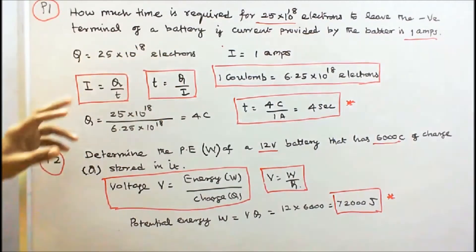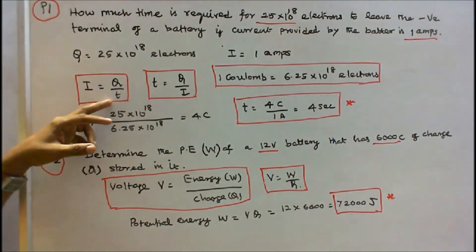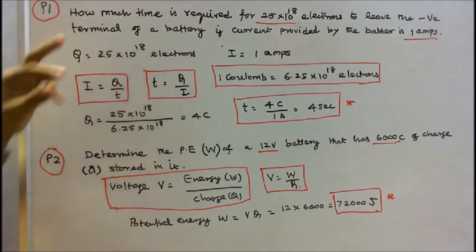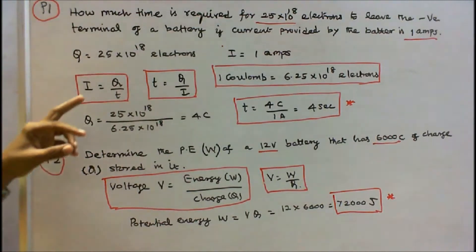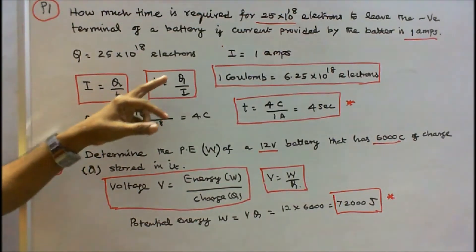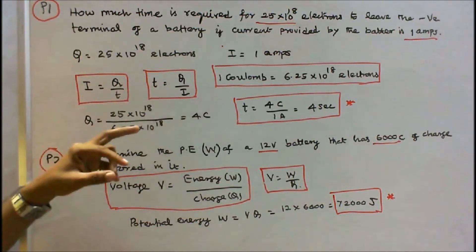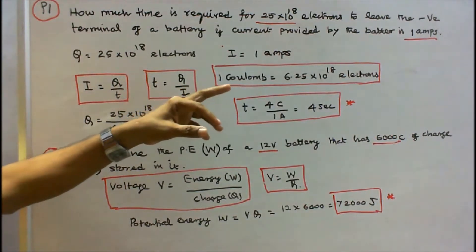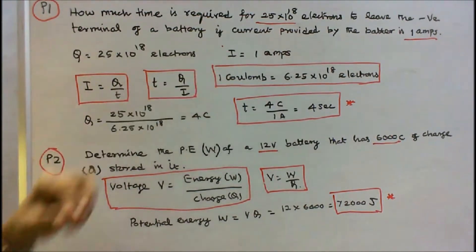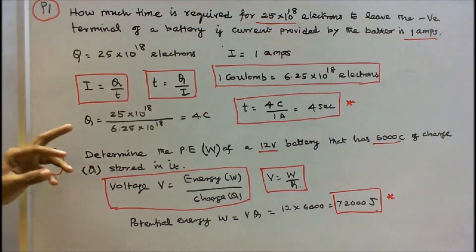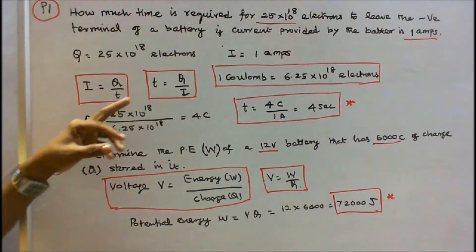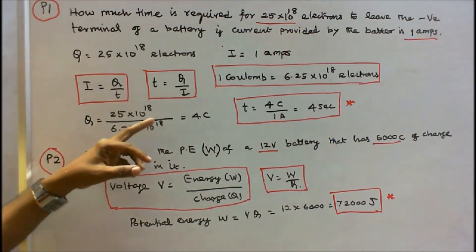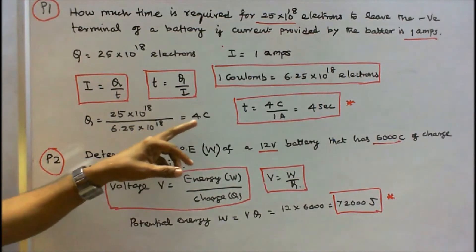We know that i = q/t. Here q is given as 25 × 10^18. Rearranging, t = q/i. We know that 1 coulomb equals 6.25 × 10^18 electrons, so q = 25 × 10^18 divided by 6.25 × 10^18, which equals 4 coulombs.